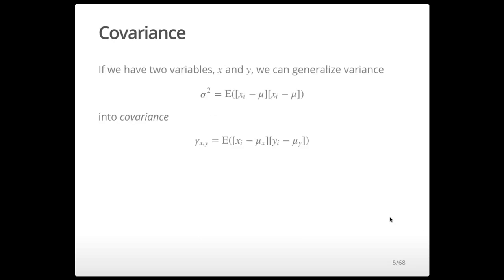If we have two variables, x and y, we can generalize the variance — which is the squared difference between observations and the mean — into covariance. The covariance is the difference of x from its mean times the difference of y from its mean. So this is the covariance of x and y, rather than the variance of x or the variance of y individually.